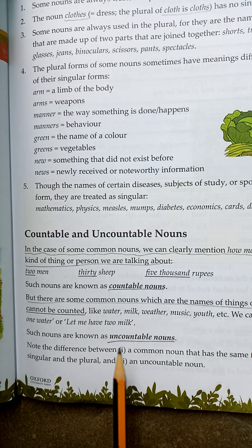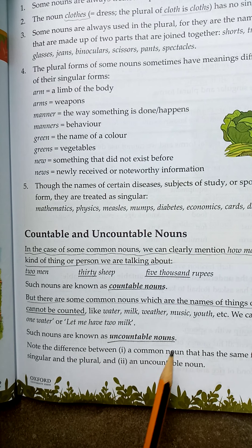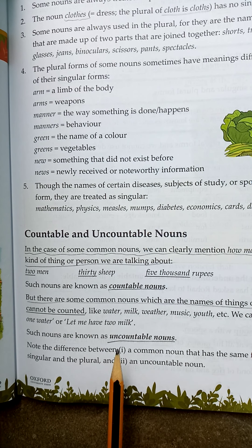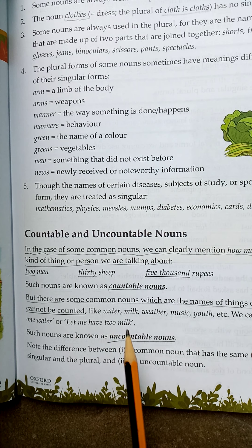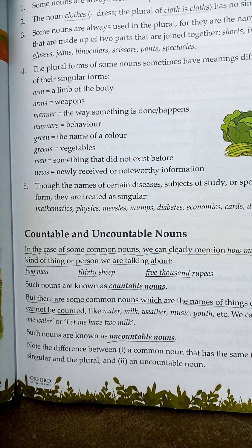Such nouns are known as uncountable nouns. Note the difference: with countable nouns we know the exact quantity — how many things are involved: 1, 2, 3. But with uncountable nouns we can't count.